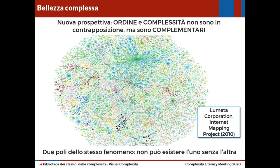Andiamo ancora avanti. Si va verso, dice Lima nel suo libro, una nuova prospettiva in cui c'è ordine e complessità allo stesso tempo, che non sono in contrapposizione ma sono complementari. Diventano due poli dello stesso fenomeno, e non può esistere l'uno senza l'altra.